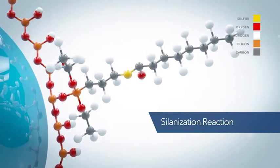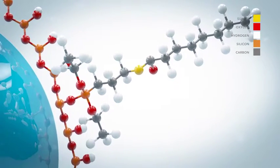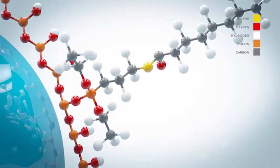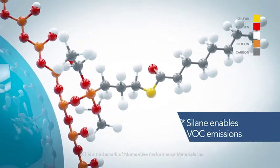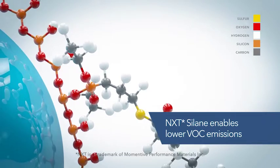After the silanization reaction, the polar oxygen on the carbonyl pulls the hydrophobic tail of the NXT silane molecule down onto the surface of the silica, thus shielding the polar OH groups.